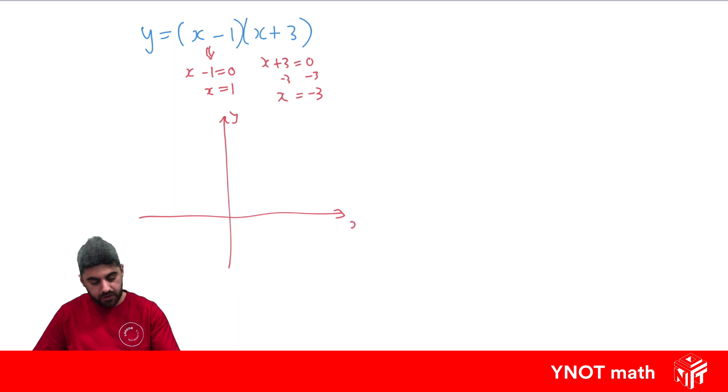We also know it's a concave up parabola because both our x terms are positive, and when we times them together we get a positive x squared. So our x-intercepts are 1 and minus 3, and it's concave up so we have to draw it like this.